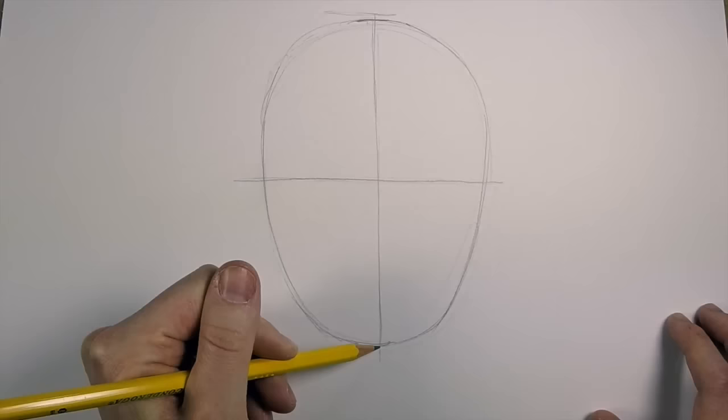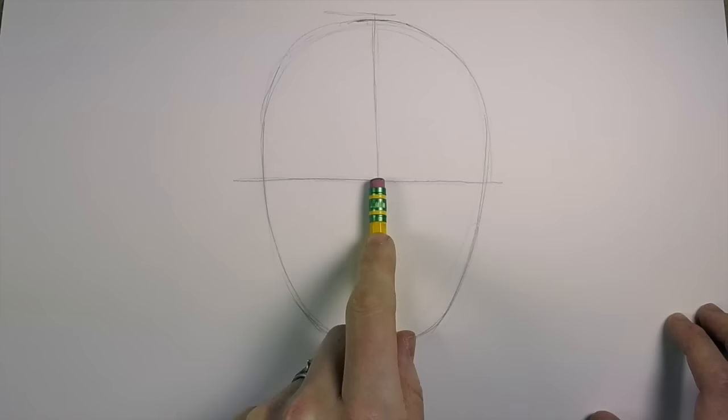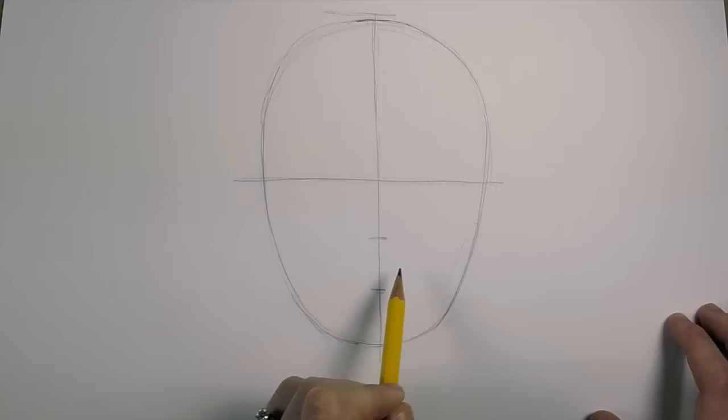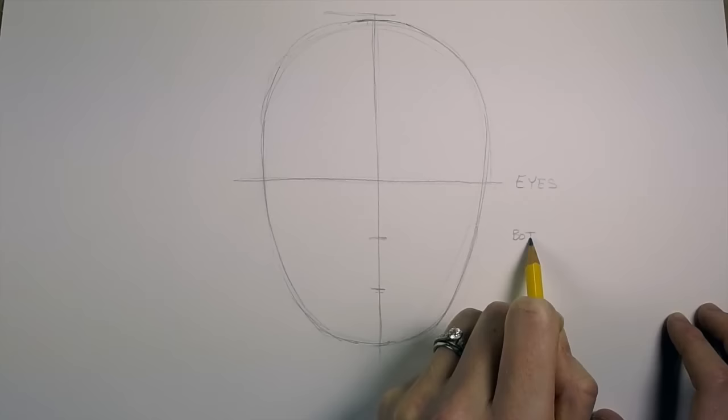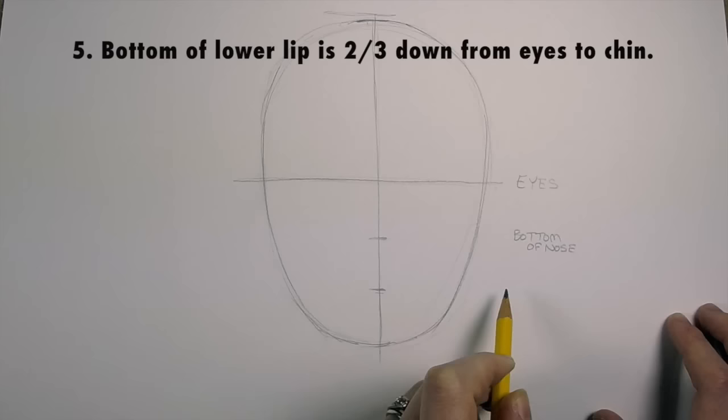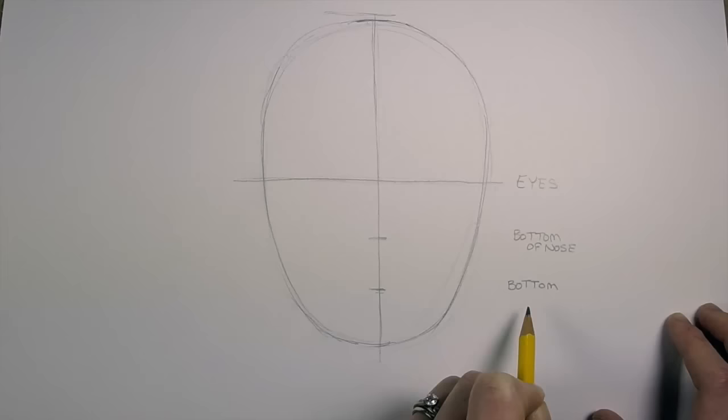Next, what we're going to do is divide the area between the eyes and the chin into thirds. When you get to this point, you don't need to draw a line all the way across—you can just make little tick marks. This line right here would be the bottom of your nose, and then this line here would be the bottom of your lower lip.